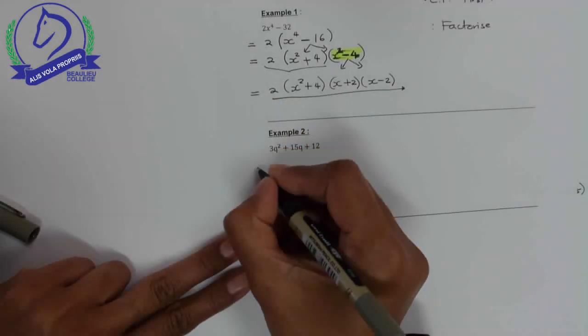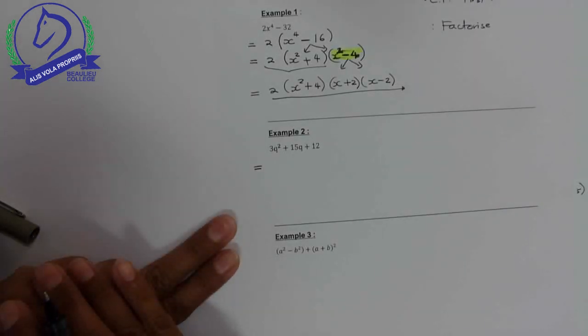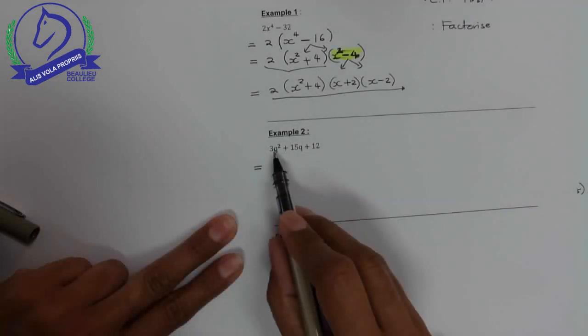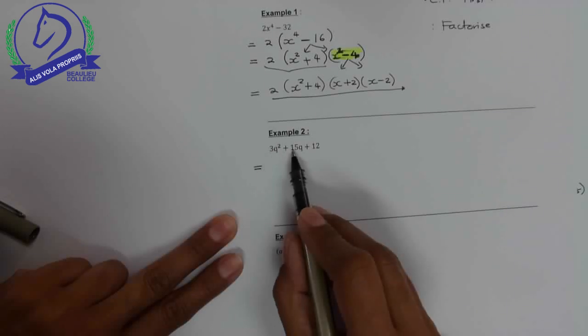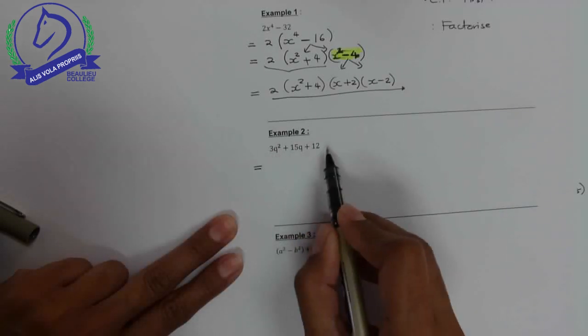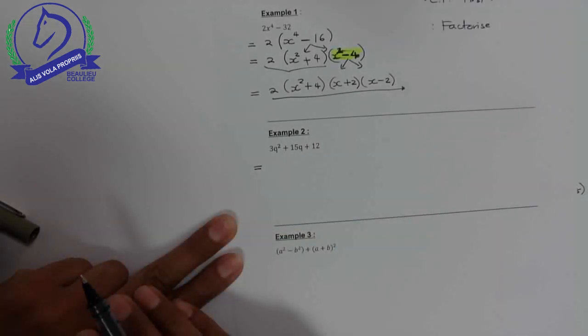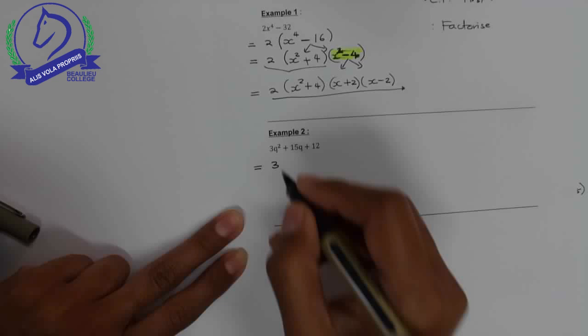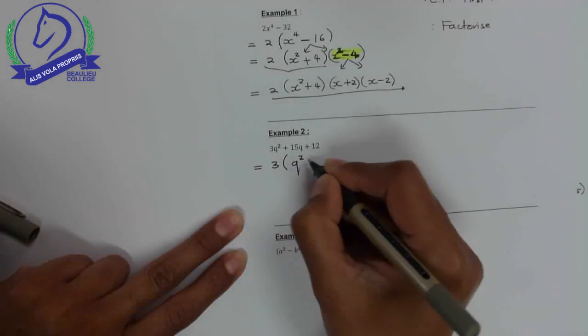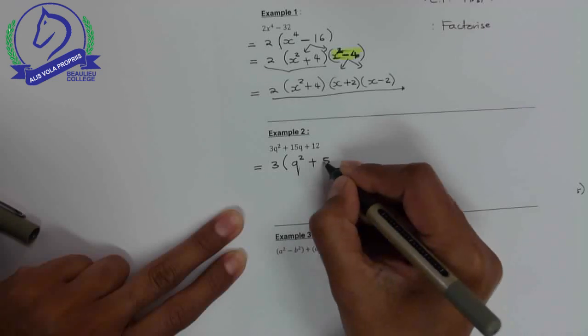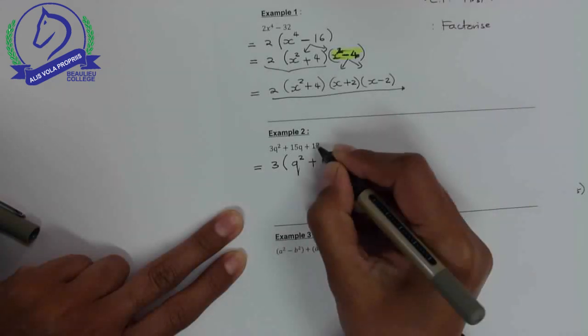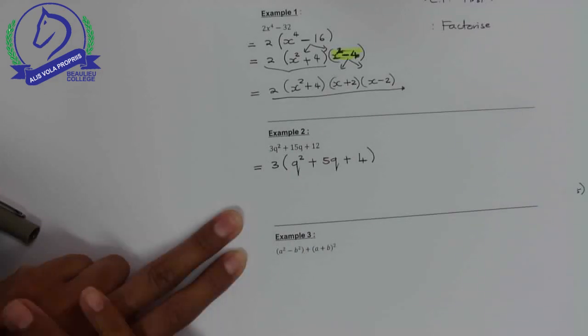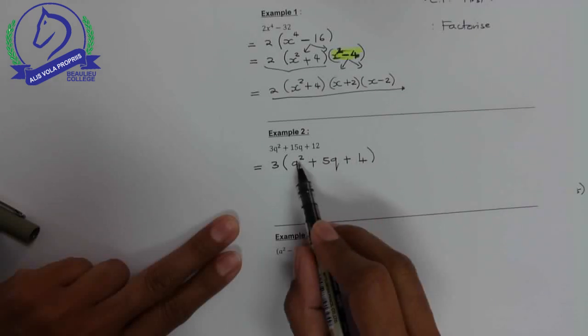Example 2. Golden rule: look for the common factor. Is anything common? You've got 3q squared, 15q plus 12. The variable is not common because there is no variable in the last term. However, 3, 15, and 12: 3 is common. That leaves you with q squared, 15 divided by 3 is 5q, 12 divided by 3 is 4. Do I stop here? Let's identify what's inside the bracket. You can clearly see it's a trinomial.